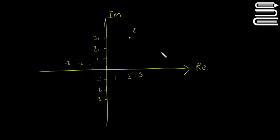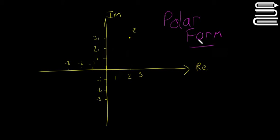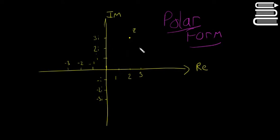Welcome to this video on complex numbers. Today we're going to be looking at the polar form. The polar form is basically just a different way of writing complex numbers. It's a pretty big topic, so make sure you get this right. It's one that sometimes people struggle with, but it's not too bad — just watch the video and hopefully it'll make sense.